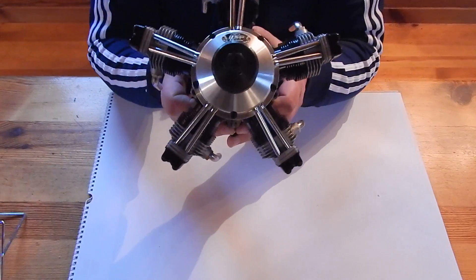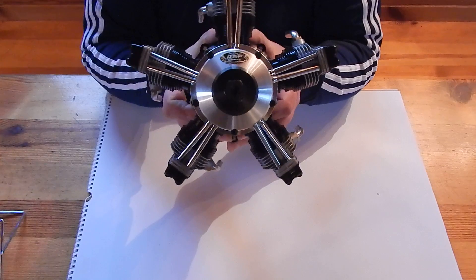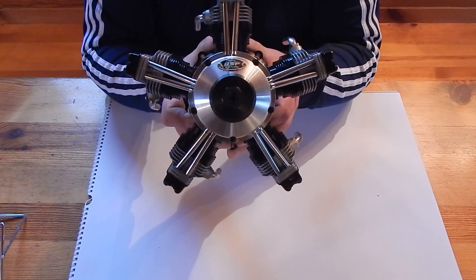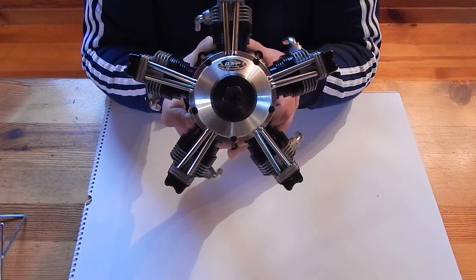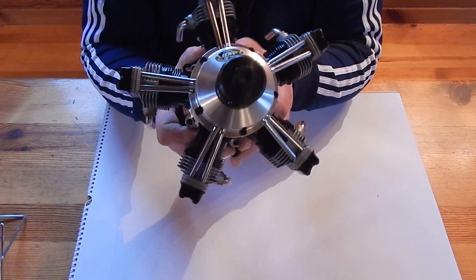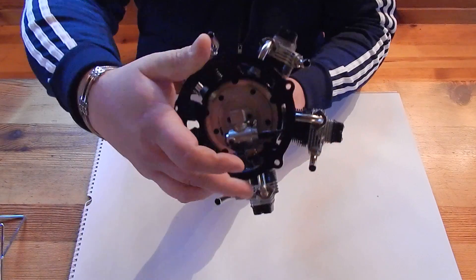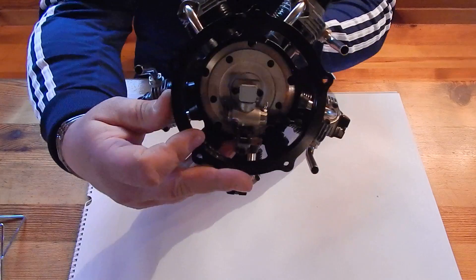And here it is, the ASP five-cylinder radial engine. Look from behind, from the side.